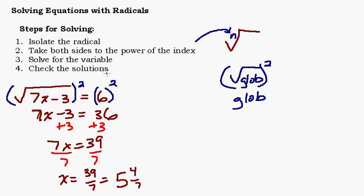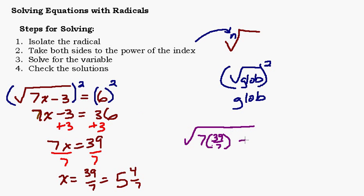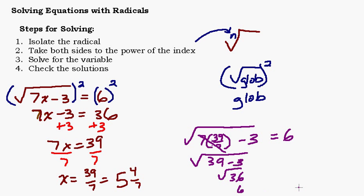The last step is to check the solutions. You always want to make sure that your solution works, because sometimes when you're working with a square root, especially in more complicated examples, you actually come up with solutions that do not make the original equation true. Let's plug in 39 sevenths. When you take 39 sevenths times 7 minus 3, the sevens cancel, giving you the square root of 36, which is 6. That does equal what's on the right-hand side. So that's our solution.